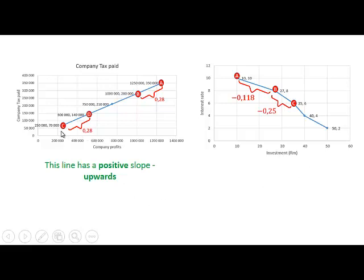As you can see, this line has a positive slope—it slopes upwards. What does this tell us? It tells us that when company profit increases, the amount of company tax paid also increases. So the two variables change in the same direction. Either both will increase or both will decrease.